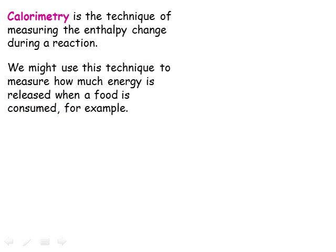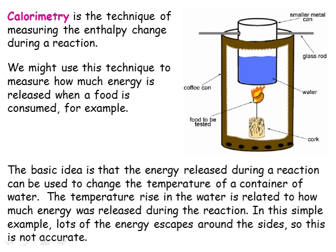While it's very useful to be able to calculate the molar enthalpy change delta H, it's necessary to be able to measure it experimentally too. The technique is called calorimetry, and is typically used to measure the energy content of fuels or foods. The basic idea is that the release of energy in the reaction results in an increase in temperature, which can be measured. We can relate the temperature change to the amount of energy needed, because it takes 4.2 joules to increase the temperature of 1 gram of water by 1 degree C. The main sources of error in a simple calorimeter are that not all heat energy ends up heating the water — heat is lost around the sides of the apparatus — and we get incomplete combustion, so the reaction doesn't produce all the heat energy that it should.